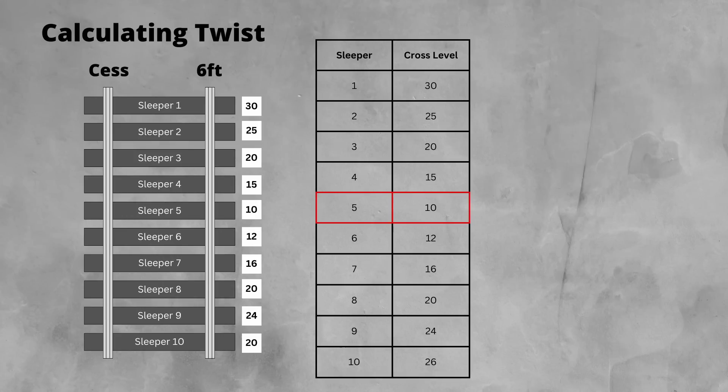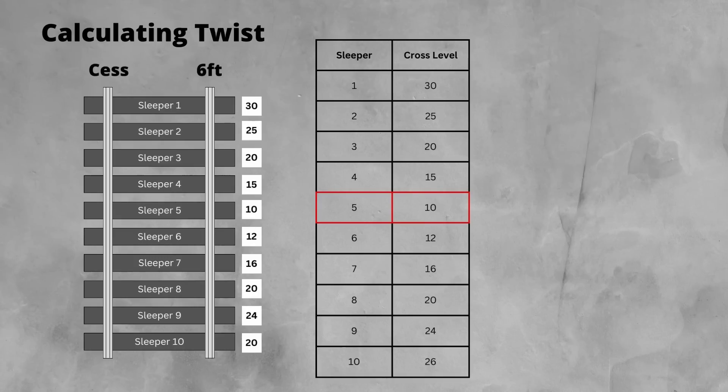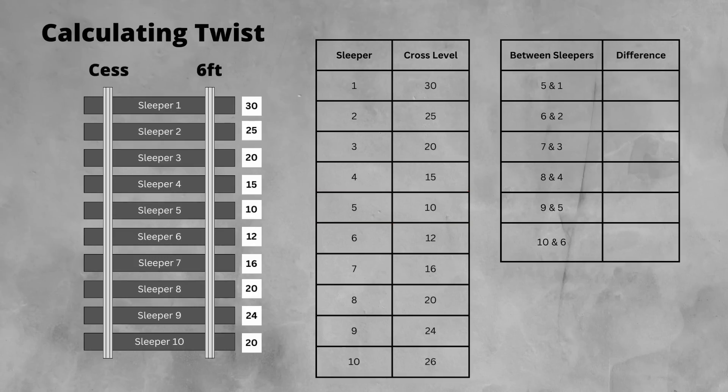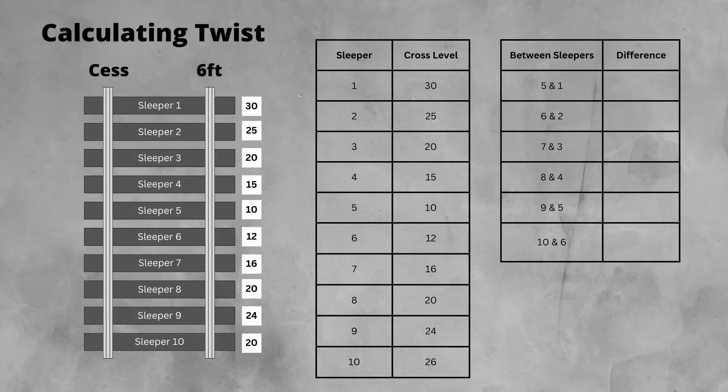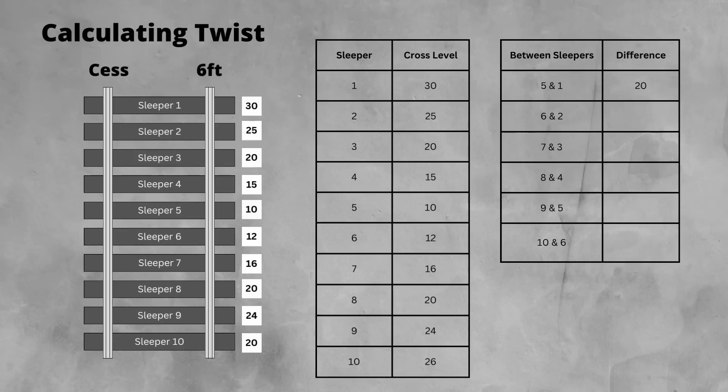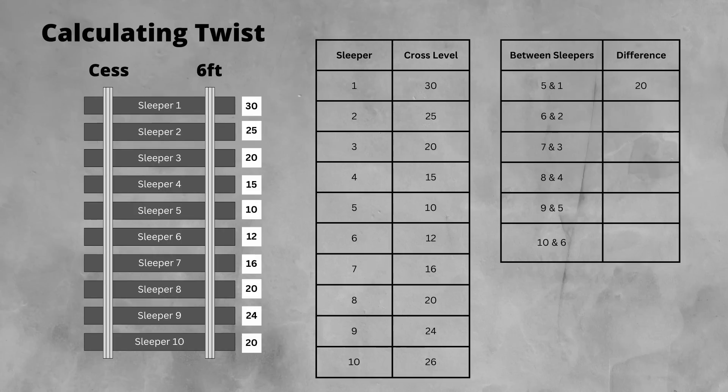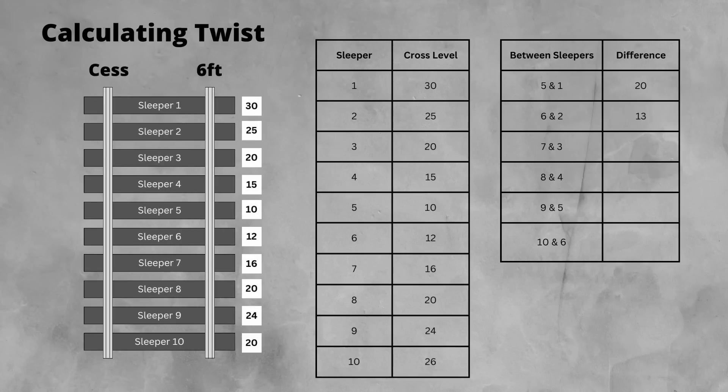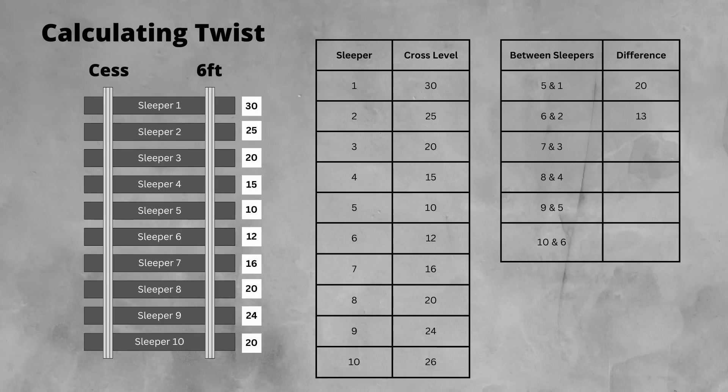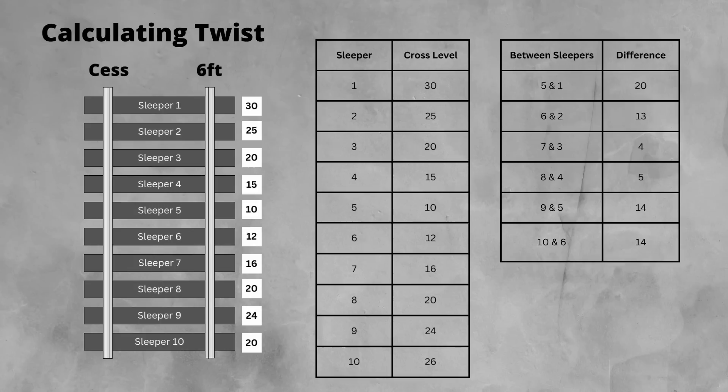Now remember, we said that twist is measured over 3m or 5 sleepers. So to find the worst twist value, we need to calculate the difference. Let's put another table up with a difference or twist. Our first value is the difference between sleeper 5 and sleeper 1. 30 minus 10 gives 20mm of difference or twist. The difference between sleepers 6 and 2 is 13 because 25 minus 12 gives 13. Let's populate the rest of the table.